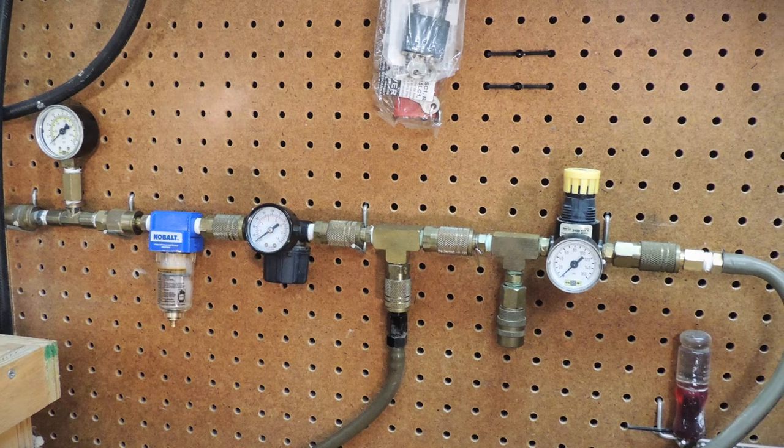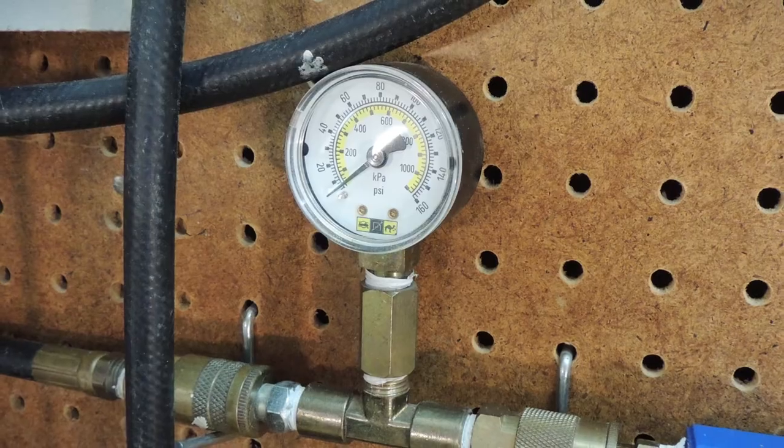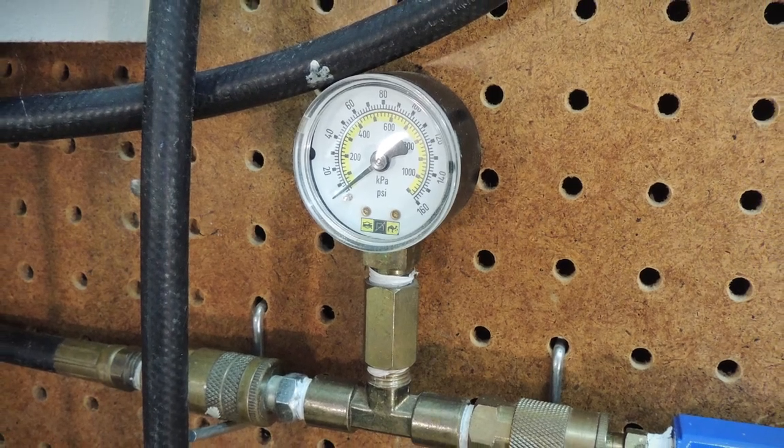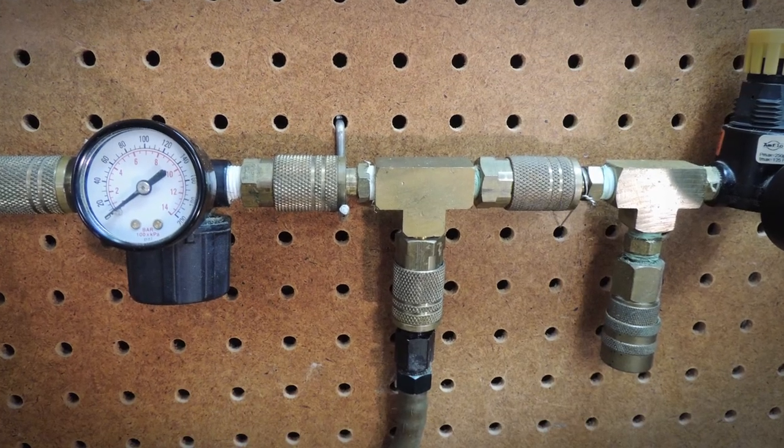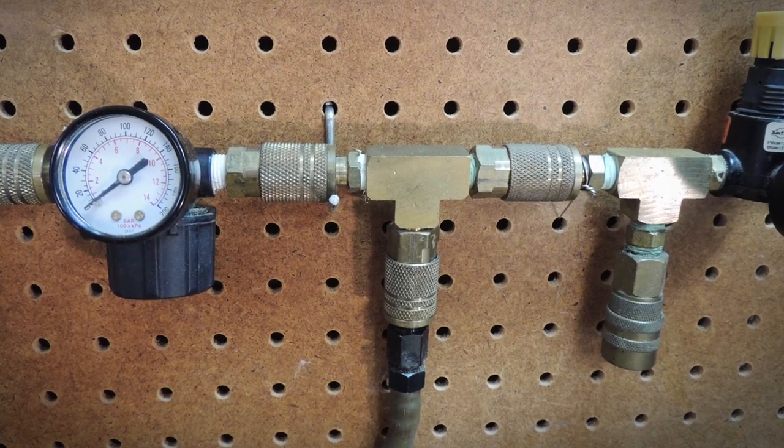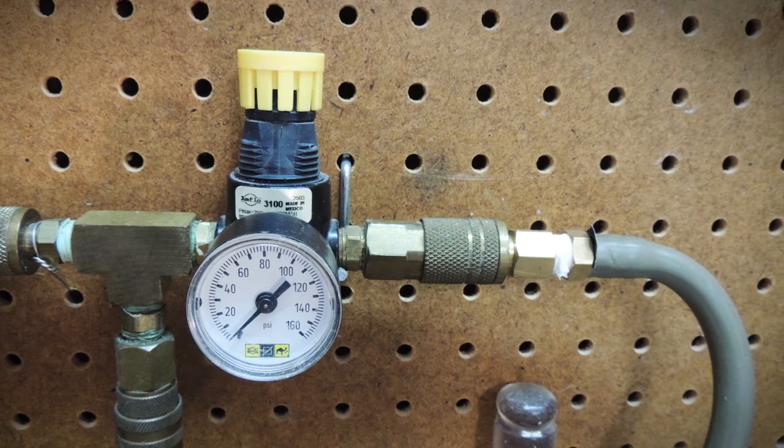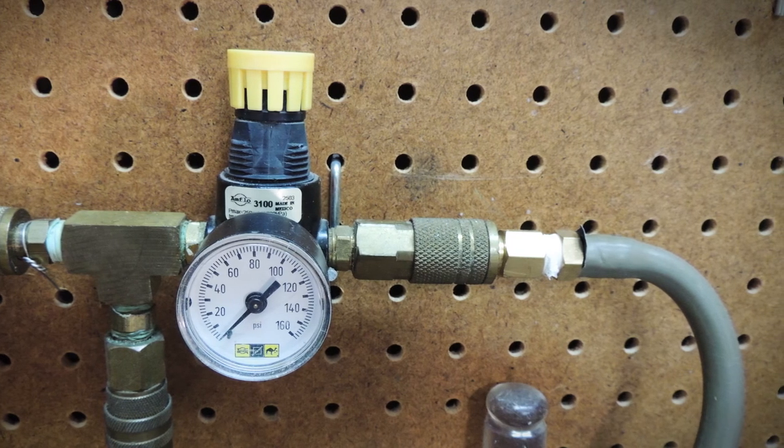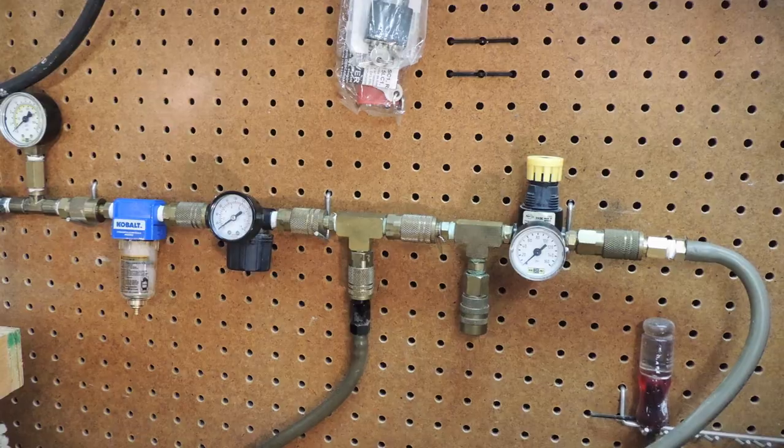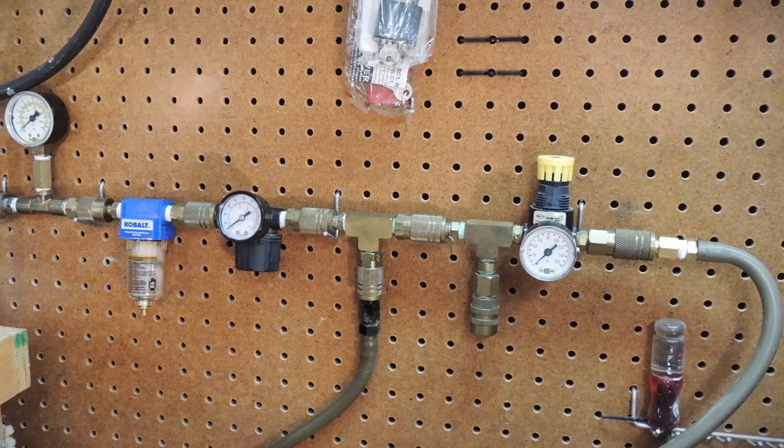All the regulators in the line have quick connects. The first regulator shows the full pressure in the tank. The second regulator reduces the pressure for two pneumatic tools. The third regulator reduces the pressure even more for a pneumatic paint sprayer. This setup really saves time when switching tools.